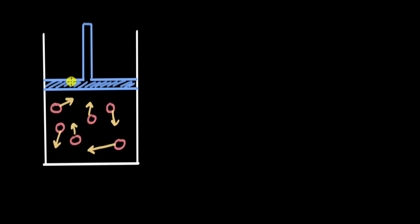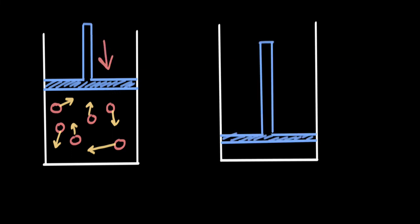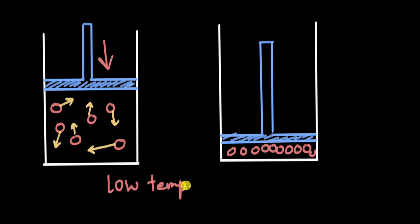We've seen how temperature affects change in state; now let's see how pressure can affect it. We have a gas in a piston system. When we push the piston down, we decrease the volume, and the particles come closer and closer to each other. We also need to ensure there is low temperature in the system. As we increase pressure, the particles come so close that they start attracting each other, and the gas turns into a liquid.